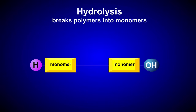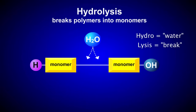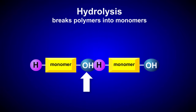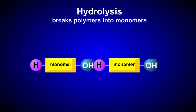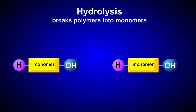Hydrolysis is the opposite of a dehydration synthesis reaction. During a hydrolysis reaction, a polymer is reduced to its monomer subunits by the addition of water. In fact, the word hydrolysis literally means to break with water. The hydroxyl group from a water molecule attaches to one monomer, and the remaining hydrogen attaches to the other monomer.